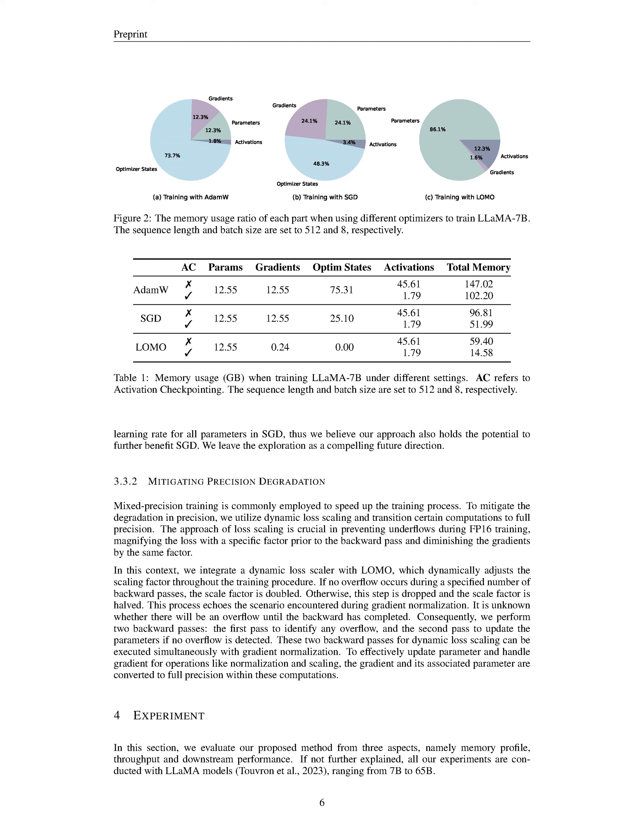These dual backward passes for dynamic loss scaling can run concurrently with the process of gradient normalization. Furthermore, for certain operations like normalization and scaling that require precise updates to parameters and gradients, we switch to full precision, converting the gradient and its related parameter to full precision within these specific calculations. The use of mixed precision training can speed up the training process but can lead to precision degradation, addressed by dynamic loss scaling and transitioning certain computations to full precision.